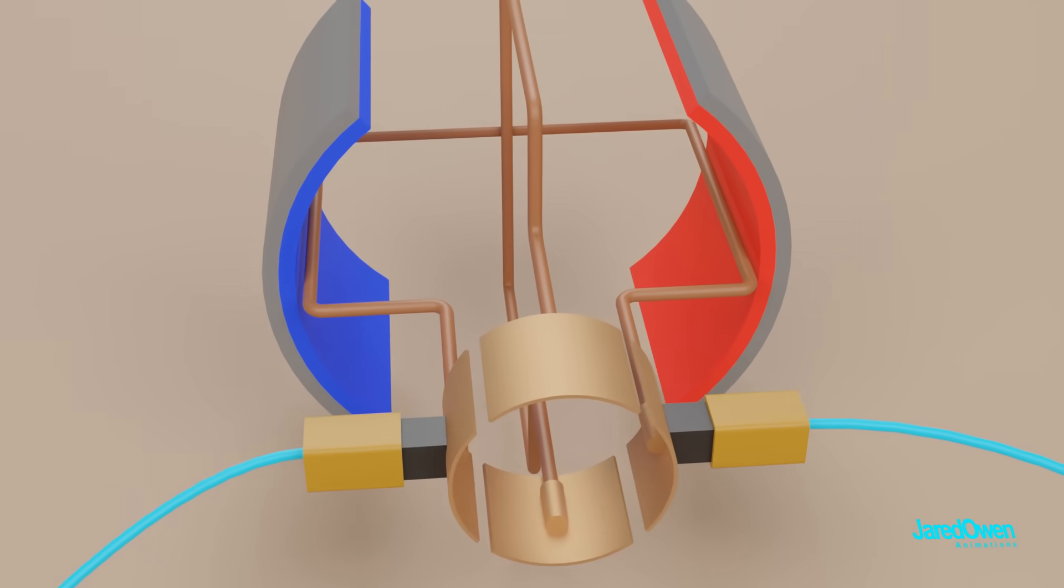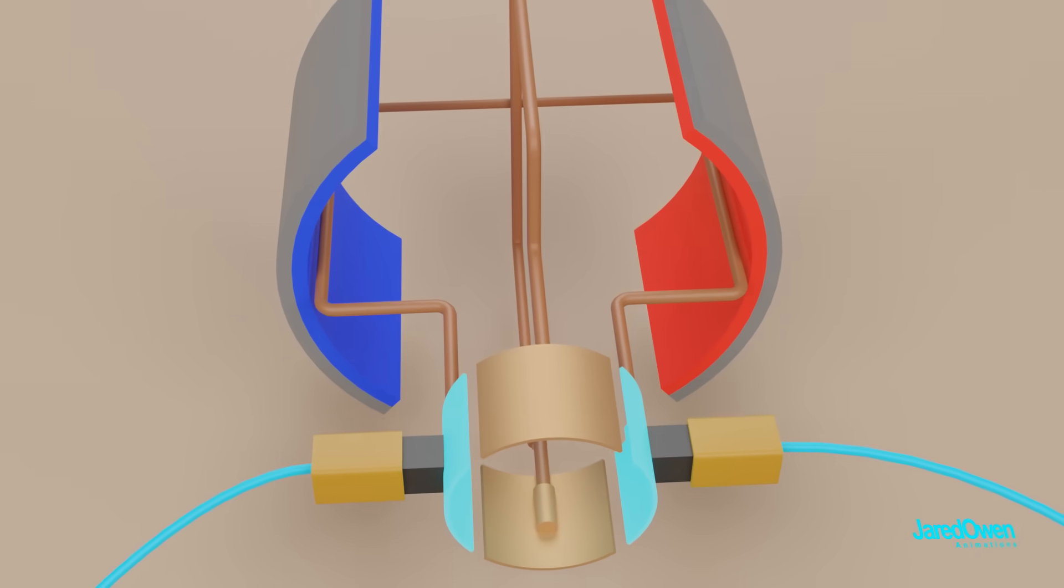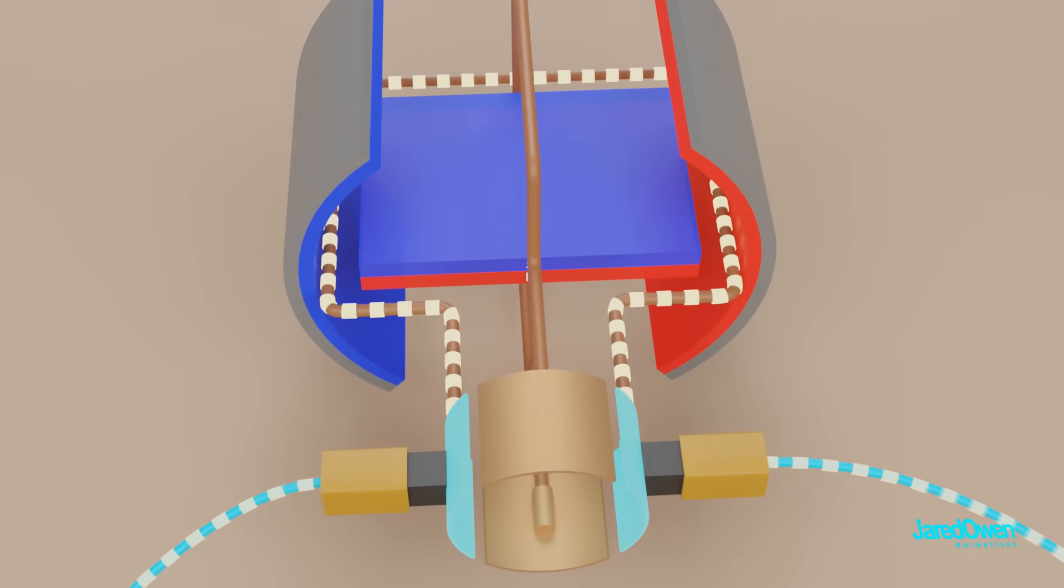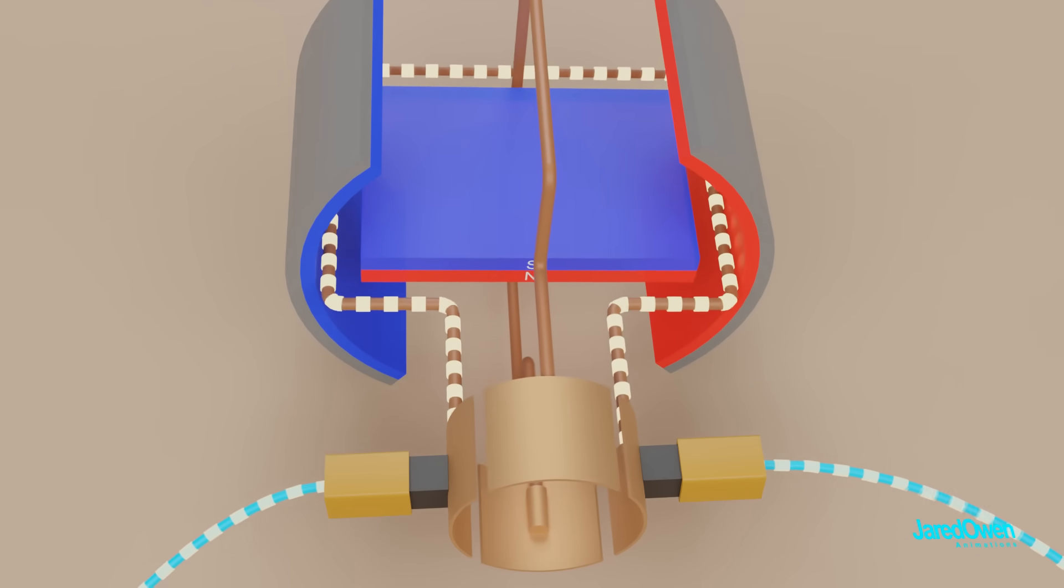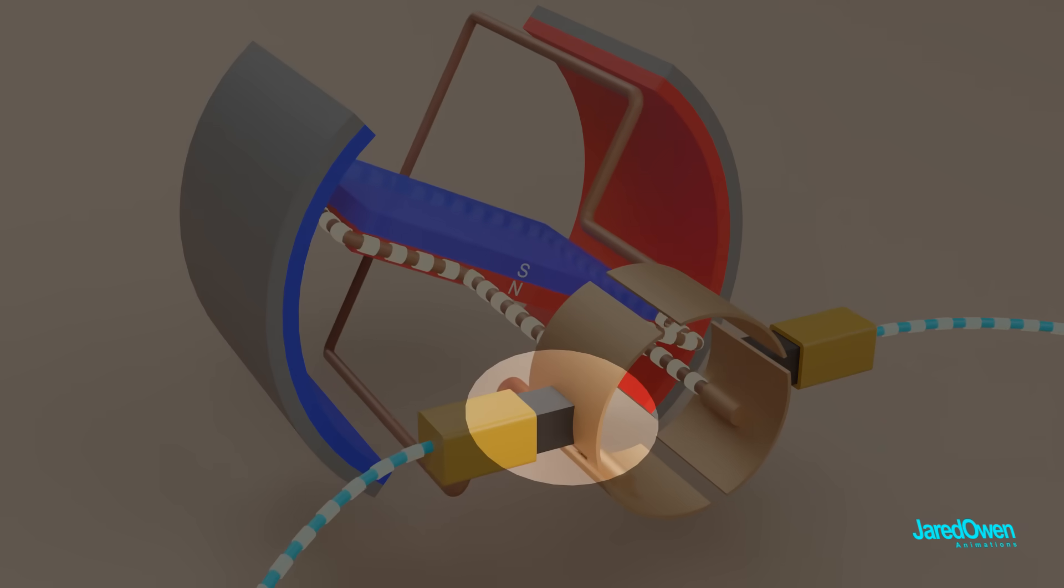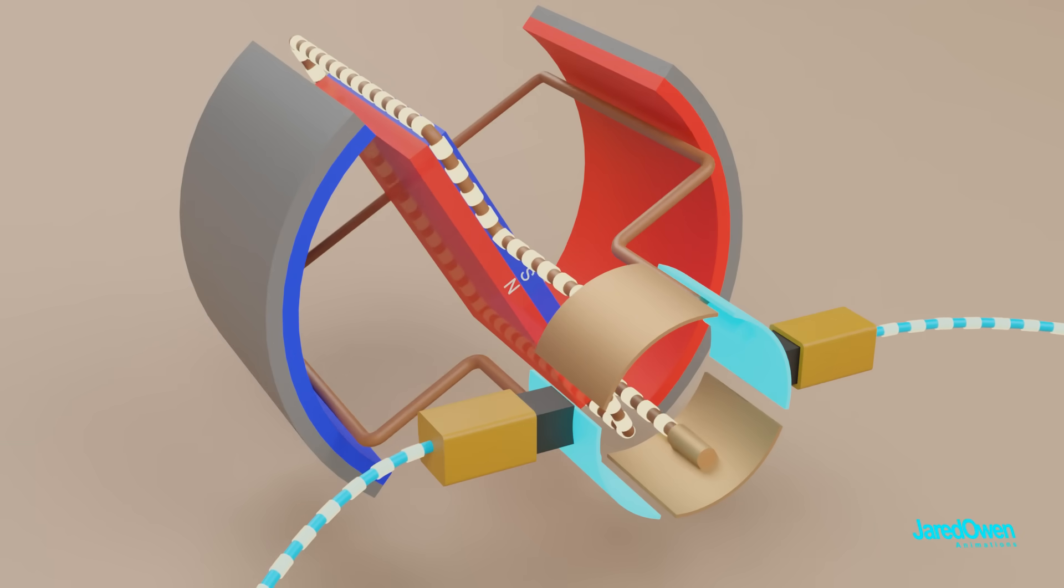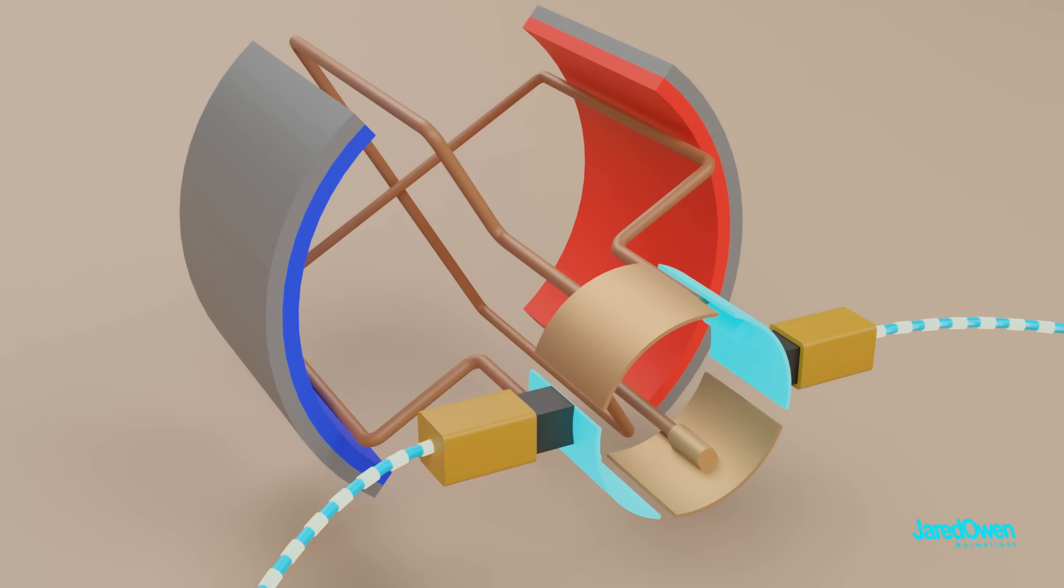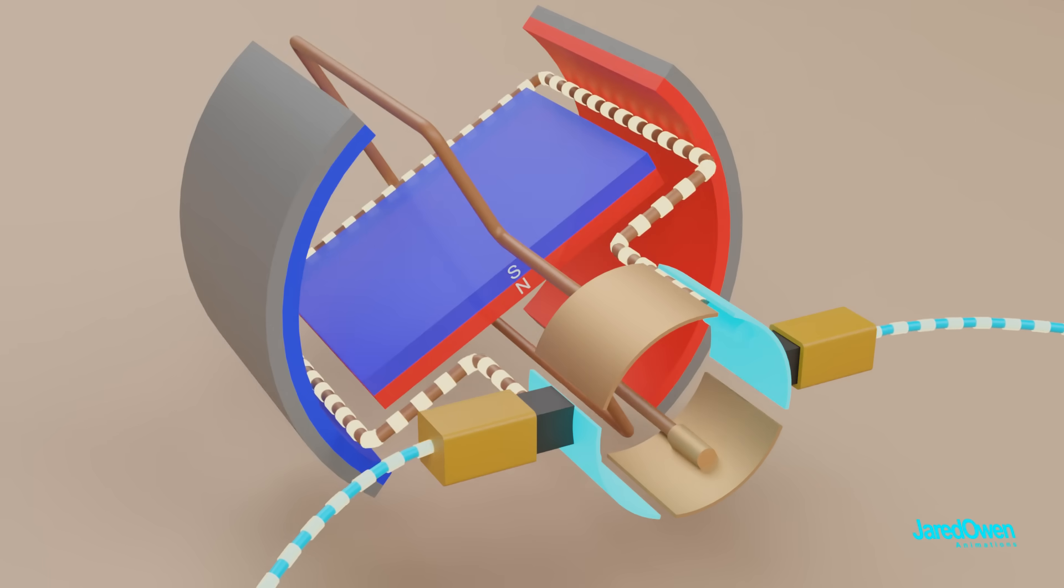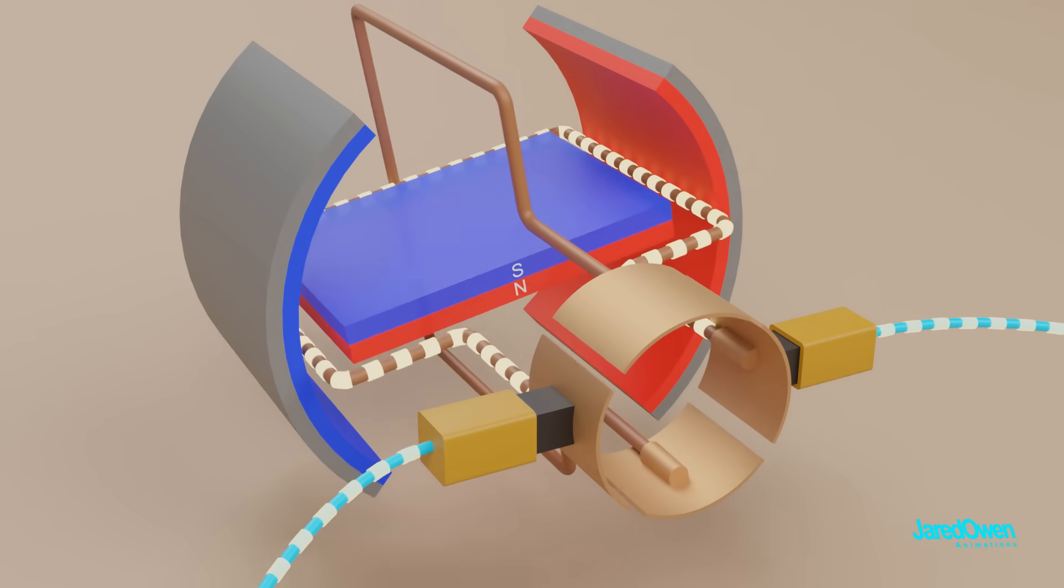So first, the brushes are in contact with these two commutator segments, which turns on this electromagnet, which causes it to start spinning. Once we get to here, the brushes switch contact to the next pair of commutator segments, which means this loop turns off, and the next loop turns on. Now this electromagnet wants to spin.